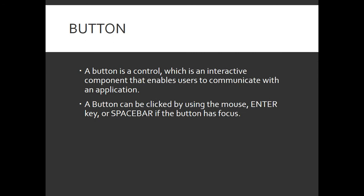The next and foremost important basic control is a Button. Whatever you are going to perform in your Windows application will be a result of a button click. A button control is an interactive component which enables the user to communicate with the application. A button click event can be triggered by a mouse click, pressing the Enter key, or the spacebar.